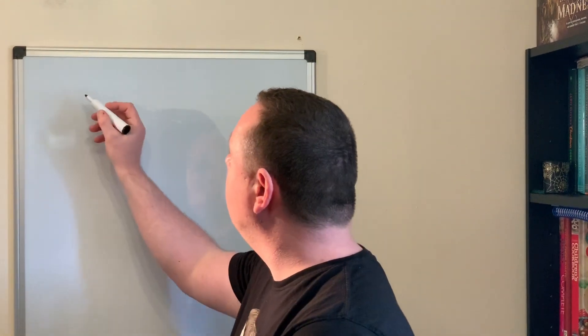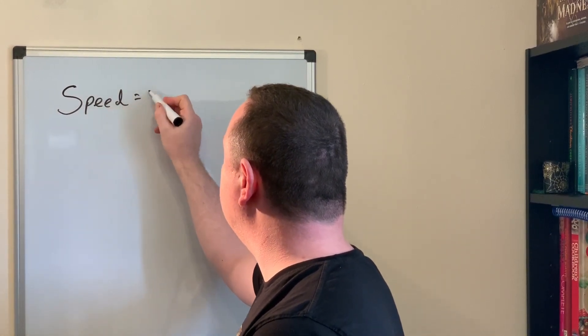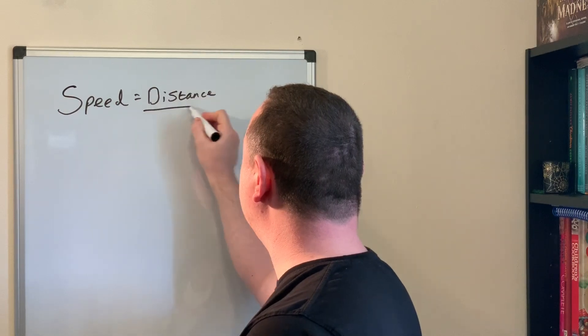First, we're going to calculate speed. Speed is distance divided by time - it's just a fraction. We can write this as speed equals distance divided by time.